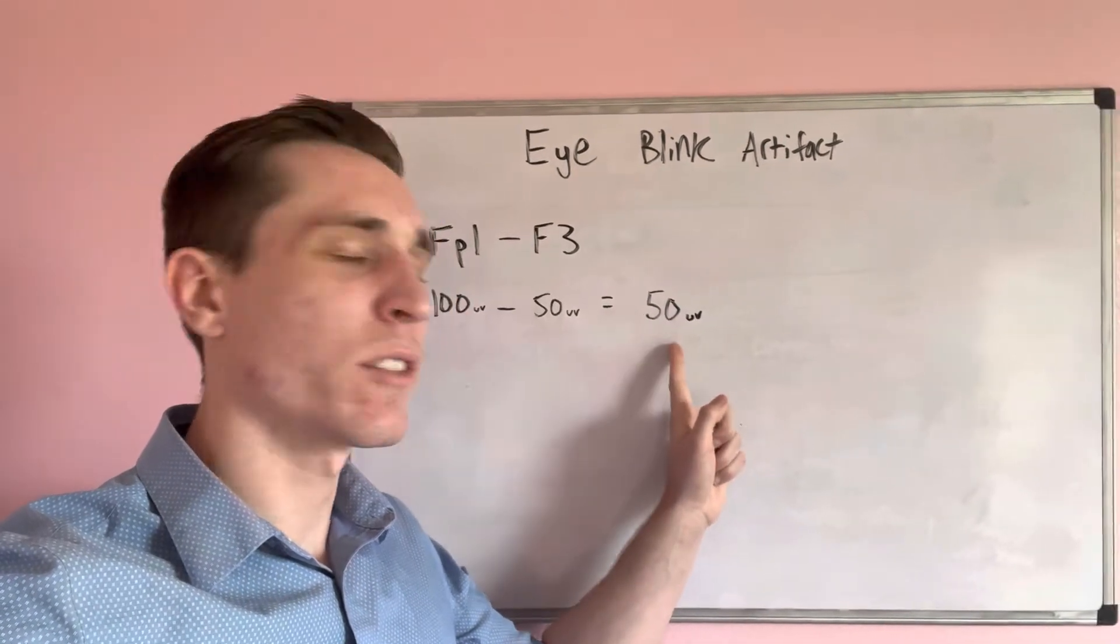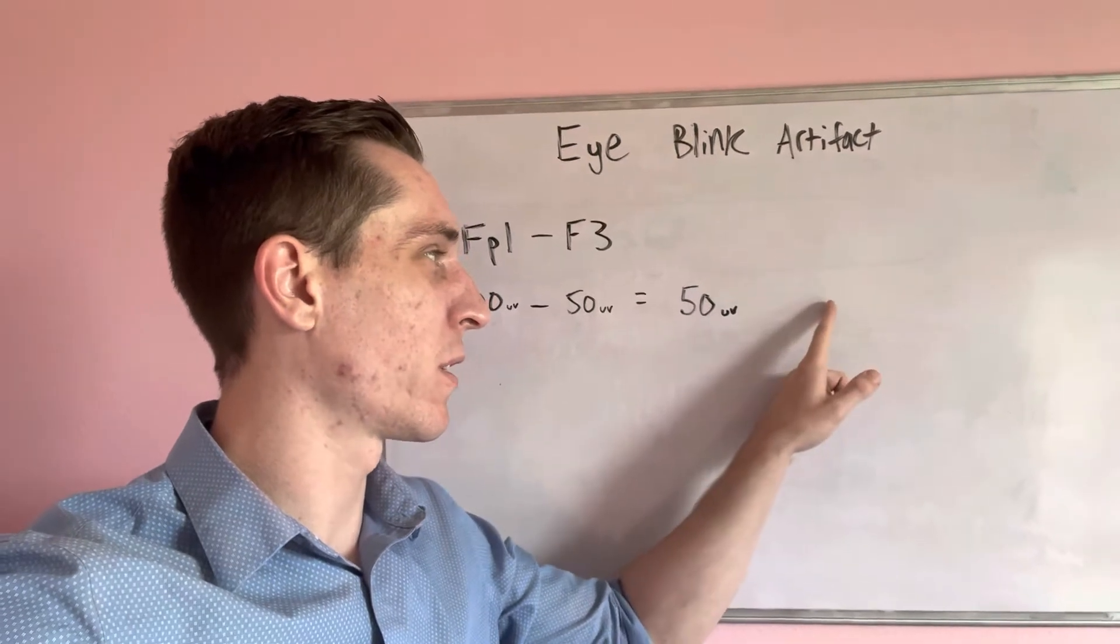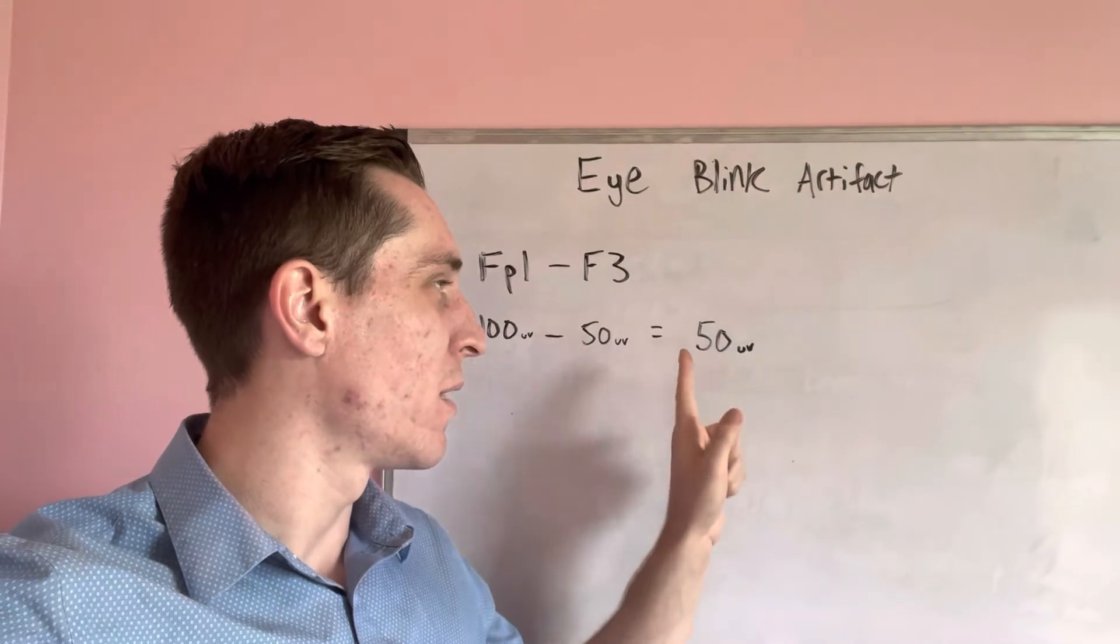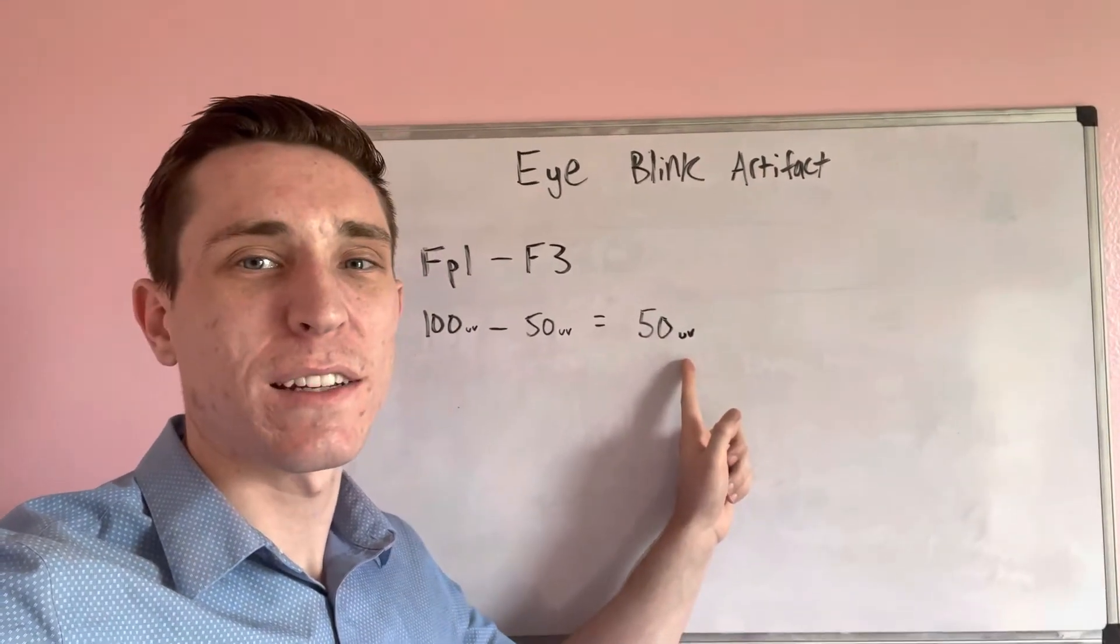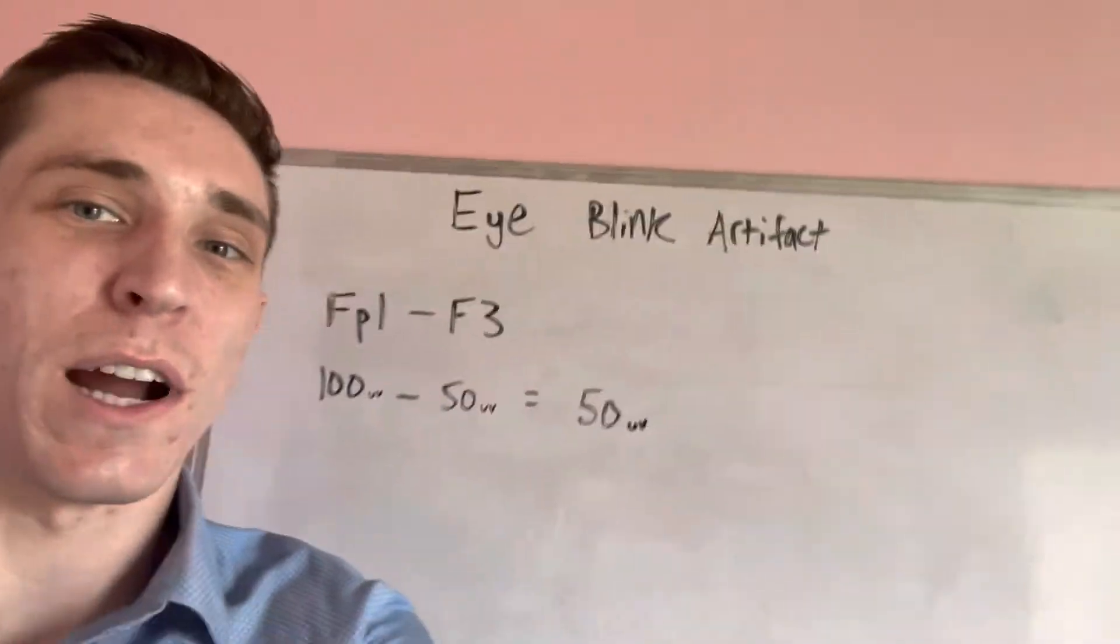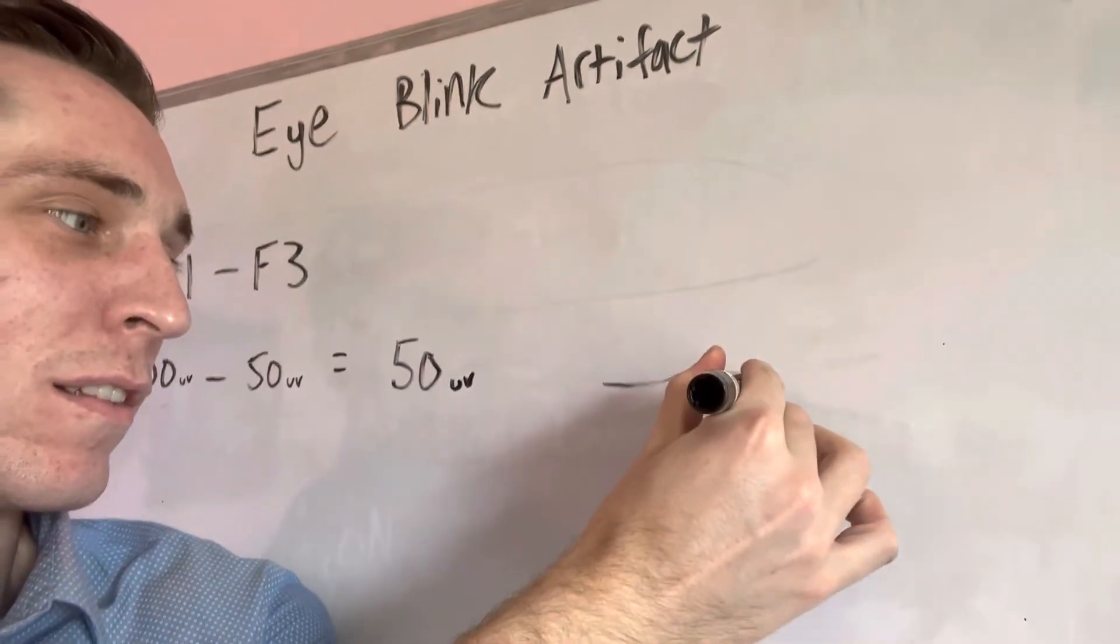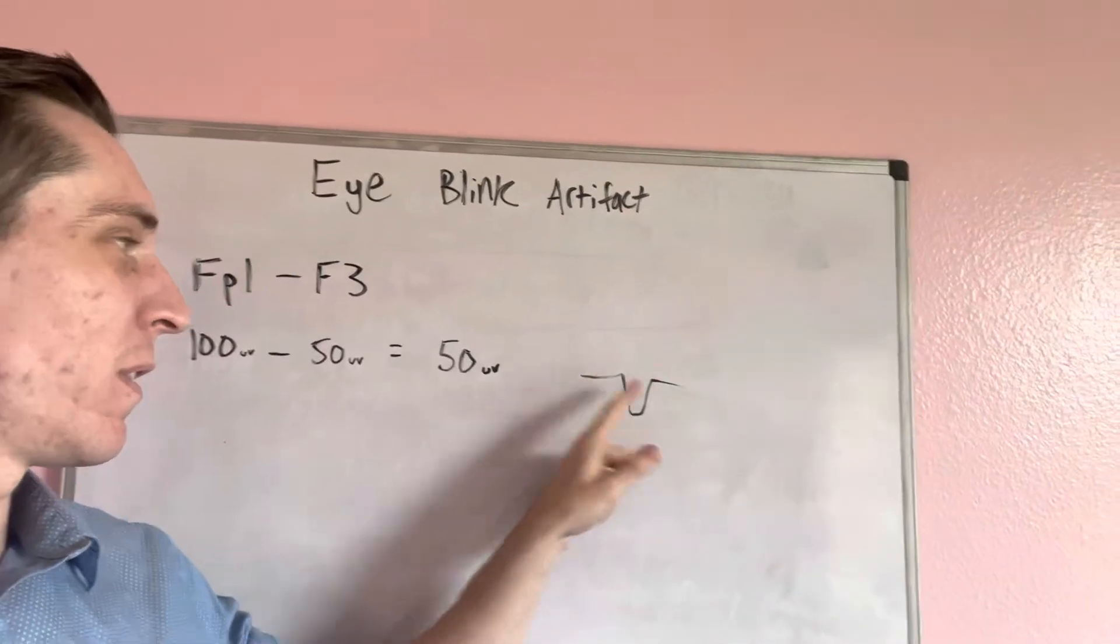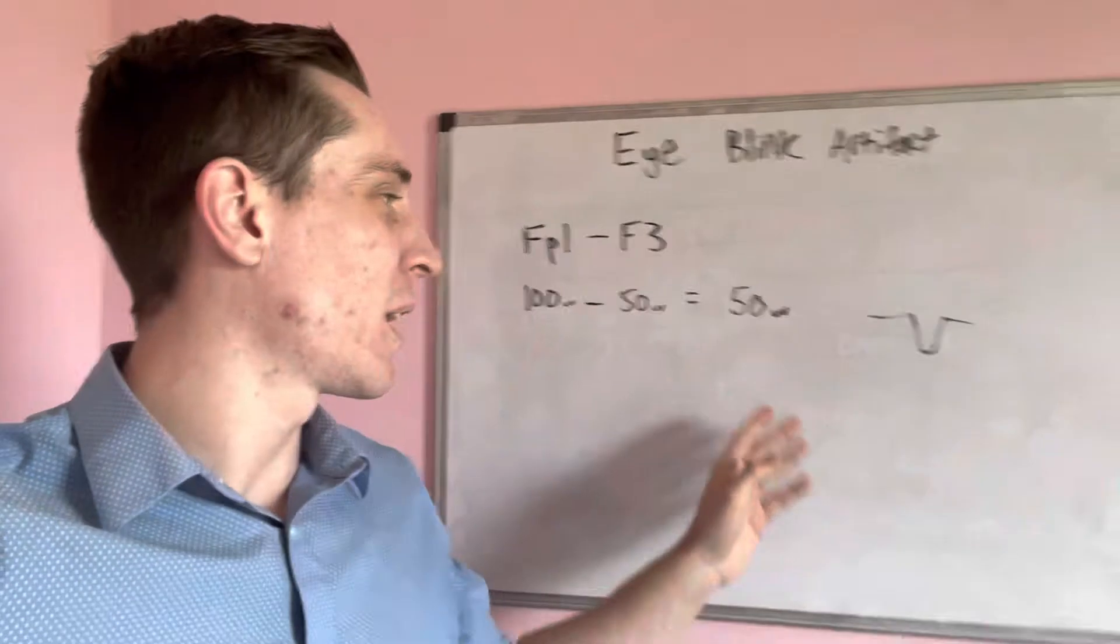Does 50 microvolts mean it goes 50 microvolts up or down? The interesting thing about EEG is that when you have a positive number, when you get a positive number at the end, it's going to be a downward deflection. So our eye blink is going to look something like that. It's going to have a downward deflection at the eye blink time.